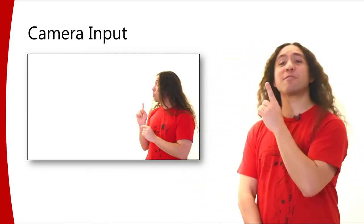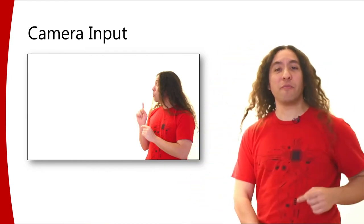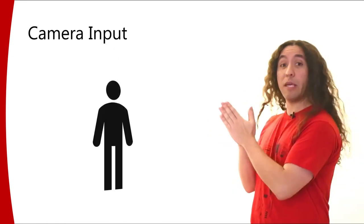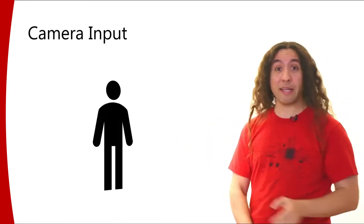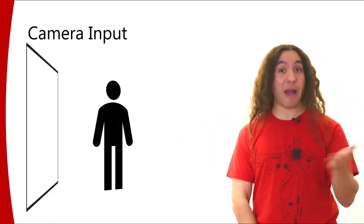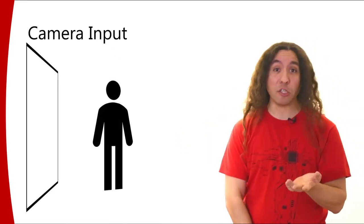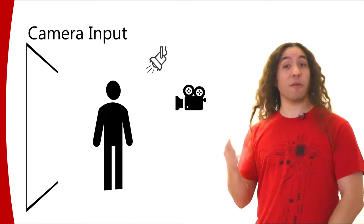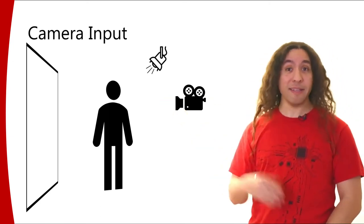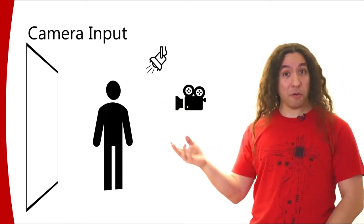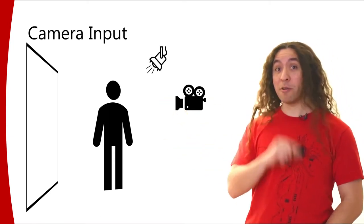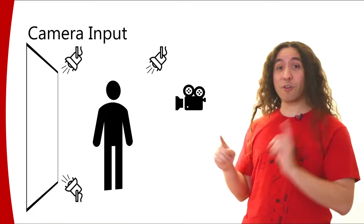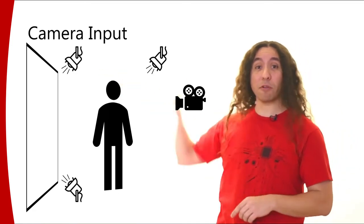So let's talk about the components of this image. Obviously there's going to be you, and there's some background behind you, and there's going to be a camera, and there's going to be some lighting for you — and also very, very importantly, there's going to be some lighting for the background.